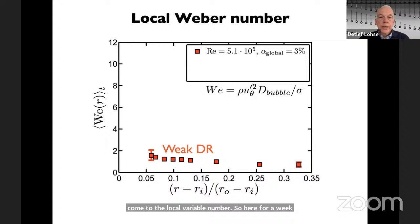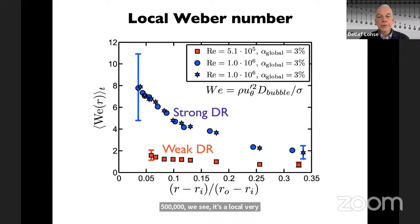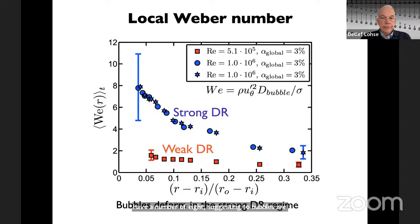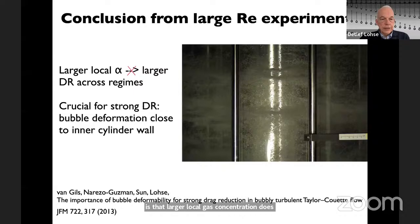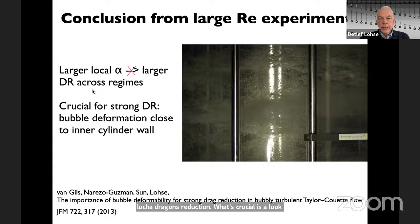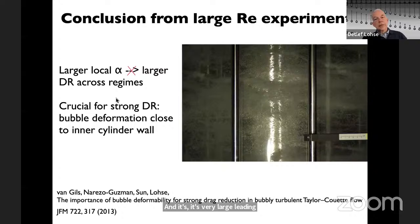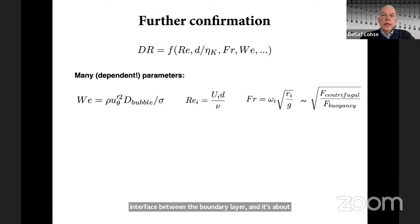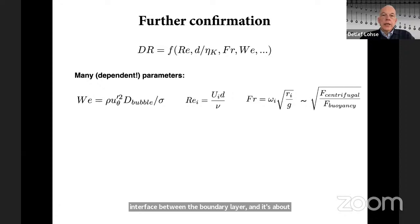So what is the dominant mechanism behind strong drag reduction? For weak drag reduction at Re = 500,000, the local Weber number is small, whereas for strong drag reduction the local Weber number is much higher — close to the inner cylinder it reaches about 8, suggesting strongly deformed bubbles. The conclusion from large Reynolds number experiments is that larger local gas concentration does not determine drag reduction; what's crucial is the local Weber number. Large deformability causes bubbles to accumulate at the boundary layer–bulk interface, blocking momentum transfer and leading to drag reduction.